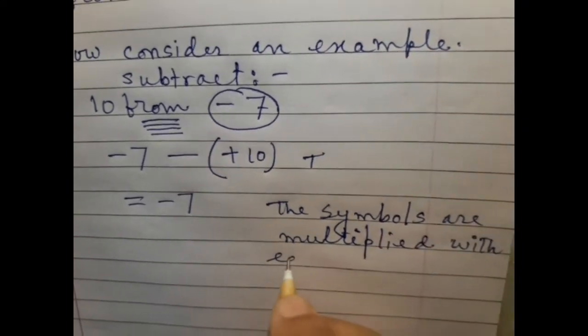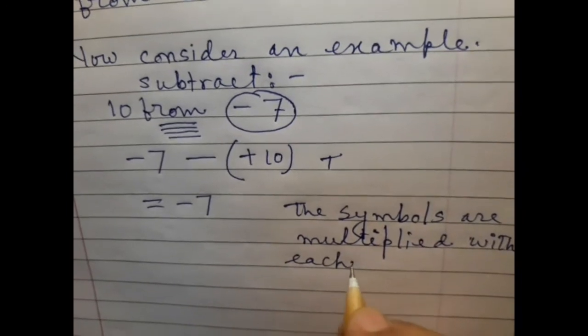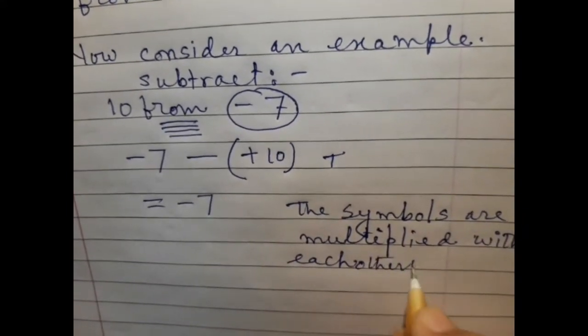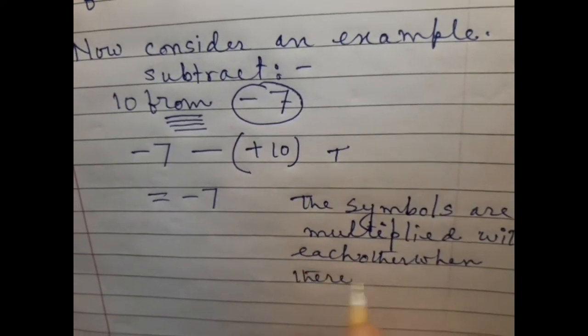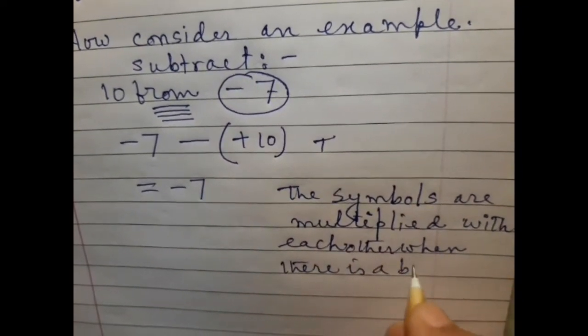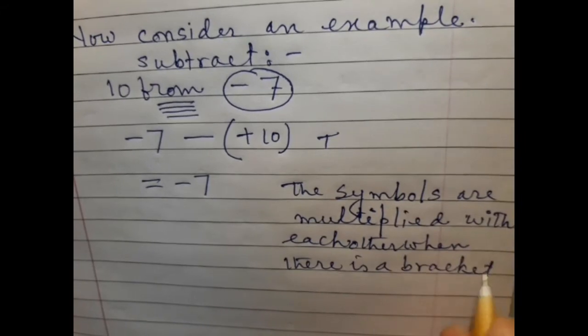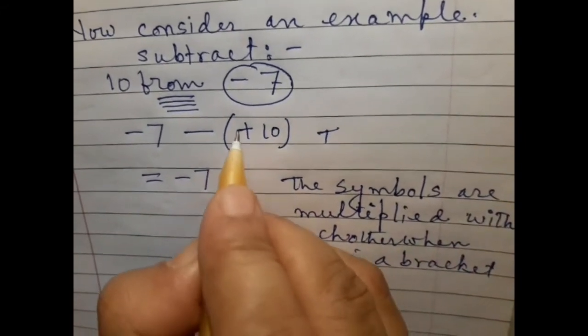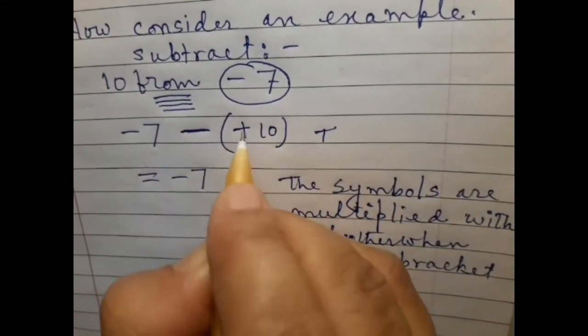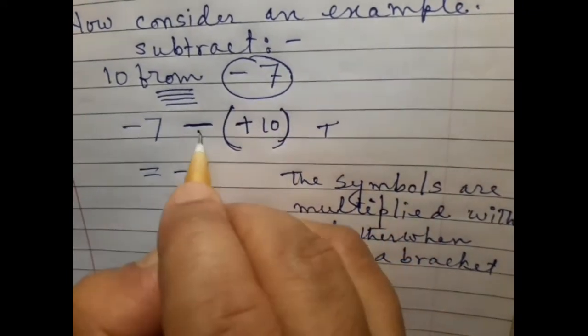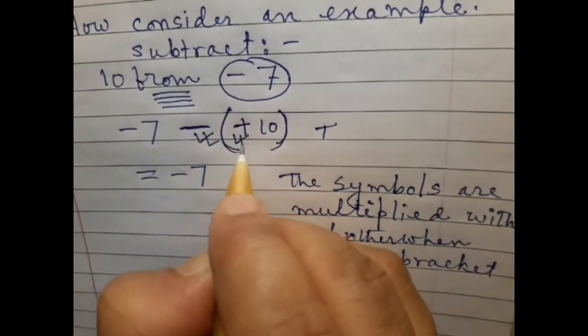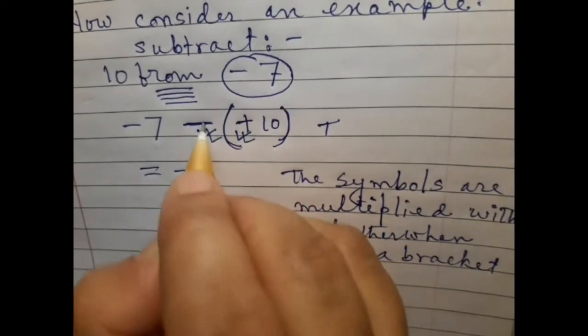The symbols are multiplied with each other when there is a bracket. Here minus and plus. There is a bracket. So this minus and this plus multiplied. Plus minus is minus.